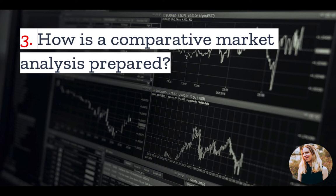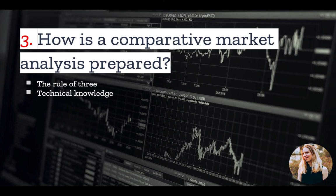Number three: how is a comparative market analysis prepared? The first step is the rule of three. A real estate agent will find three properties that have recently sold in the area. It is preferable that the sales have occurred within three months, although up to six months is acceptable. The three properties should be similar and located as close together as possible. Once these comps are selected, the agent then determines how they differ from the property in question and adjusts the sales prices of each comp to determine how much it would have cost if it were nearly identical to the subject property.